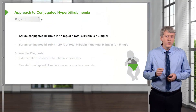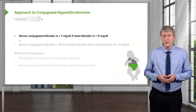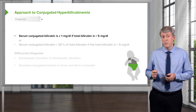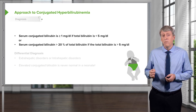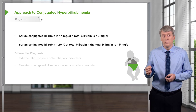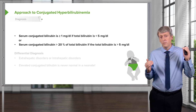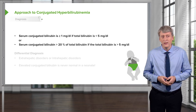The definition of conjugated hyperbilirubinemia is more than 1 mg per deciliter if the total bilirubin is less than 5, or more than 20% of your total bilirubin if the total bilirubin is more than 5. We have to remember that 5 cutoff in terms of how we define hyperbilirubinemia.